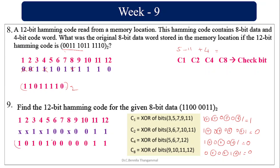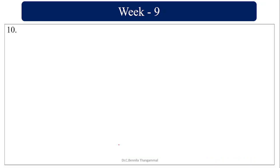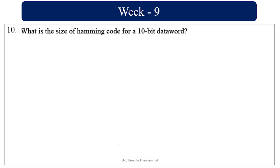The resulting 12-bit Hamming code is: 1, 0, 1, 0, 1, 0, 0, 0, 0, 0, 1, 1. For a 10-bit data word, since data bits from 5 to 11 require 4 parity bits, 10 + 4 = 14 bits is the Hamming code size.